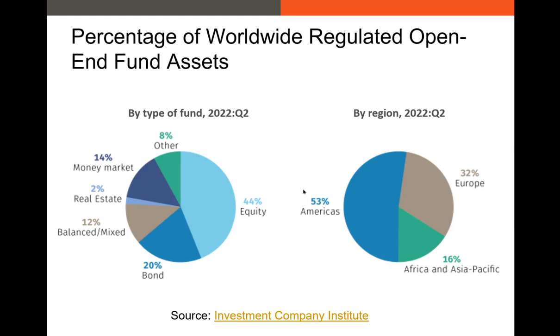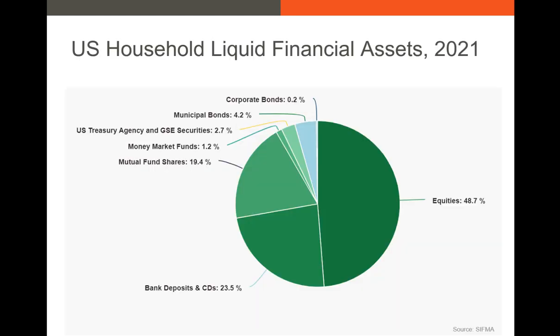Other assets in open-ended funds include money market securities — short-term instruments like T-bills, money market mutual funds, or repos. By region, the Americas represent the majority of open-ended mutual funds, but Europe, Asia, and Africa each contribute a large portion. For US retail investors, equities make up almost a majority of invested income, with a large portion of the remainder in mutual fund shares — either passively or actively managed — plus bank deposits, CDs, corporate bonds, municipal bonds, and treasury debt.